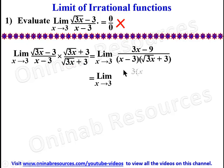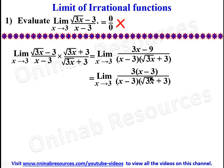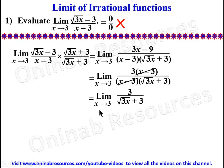We can factorize the numerator: 3 is a factor, giving 3 times (x minus 3). Then the limit is 3(x minus 3) over (x minus 3)(root(3x) plus 3). We can see that (x minus 3) cancels, leaving 3 over (root(3x) plus 3). We can now substitute directly: 3 over root(3 times 3) plus 3.